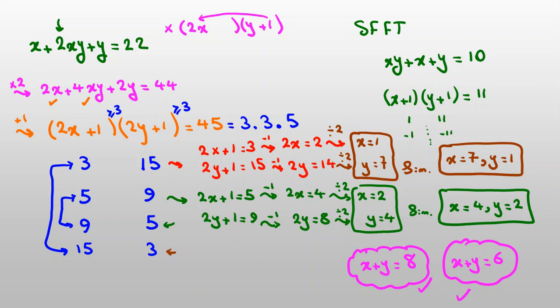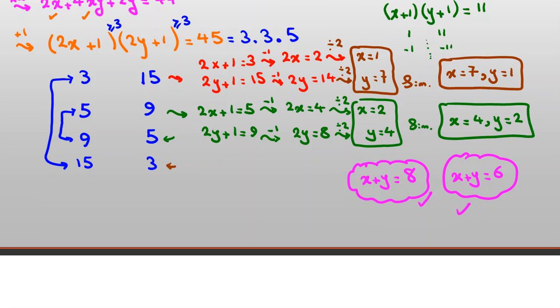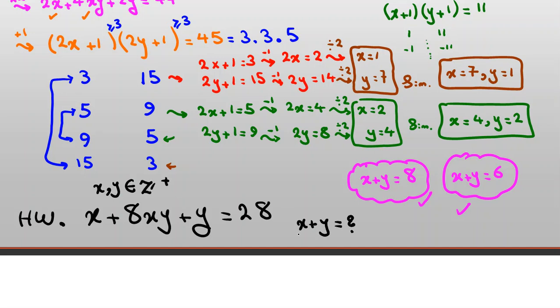As a homework, let me tell you another problem. You can solve this one as homework. You can say, for example, x plus 8xy plus y equal to 28. And try to solve this as a homework, and you can comment below this video your answer and say, x plus y, x and y again, are natural numbers or positive integer. X plus y can be what numbers? You can again use generalization of Simon's favorite factoring trick to solve this.